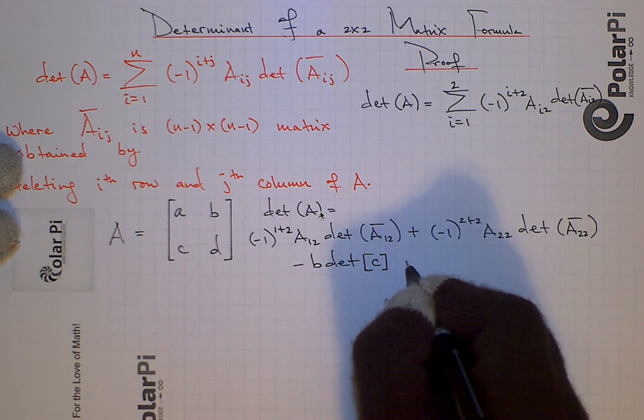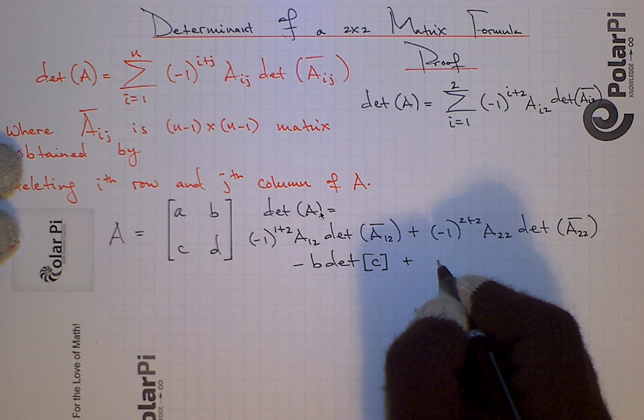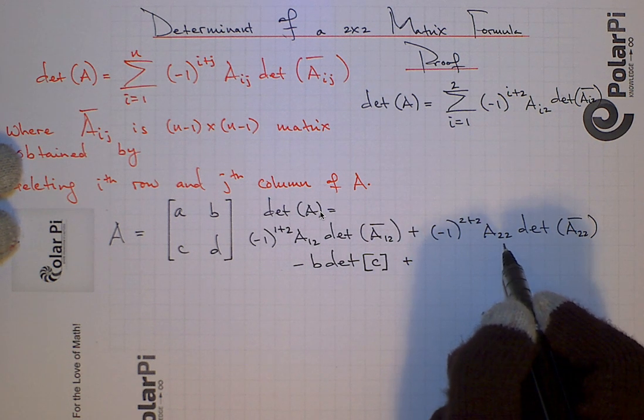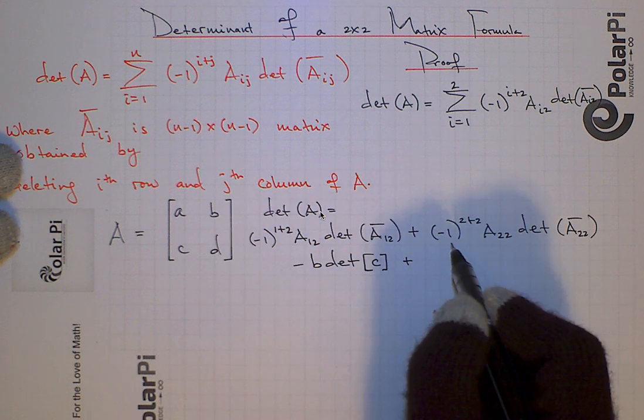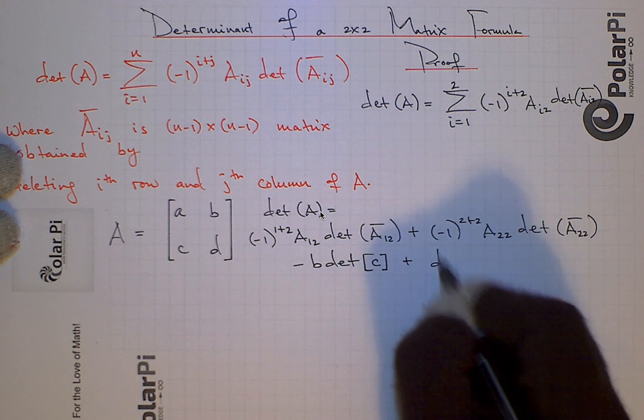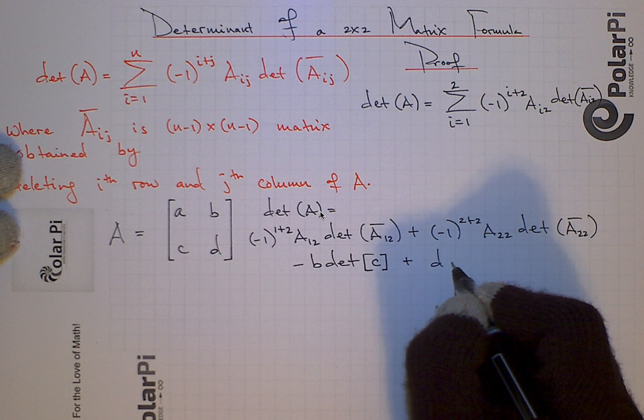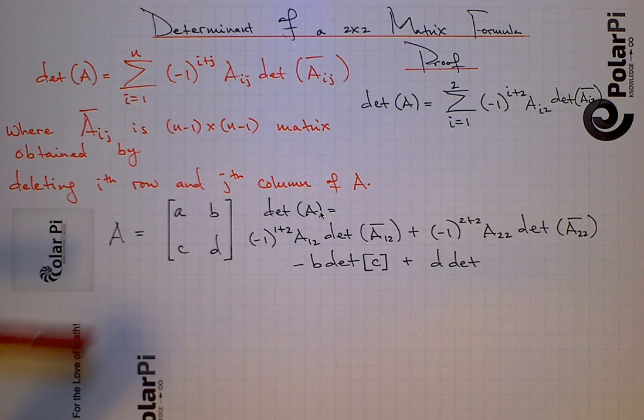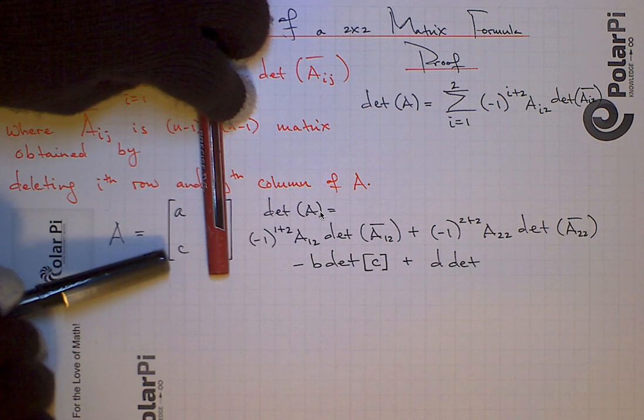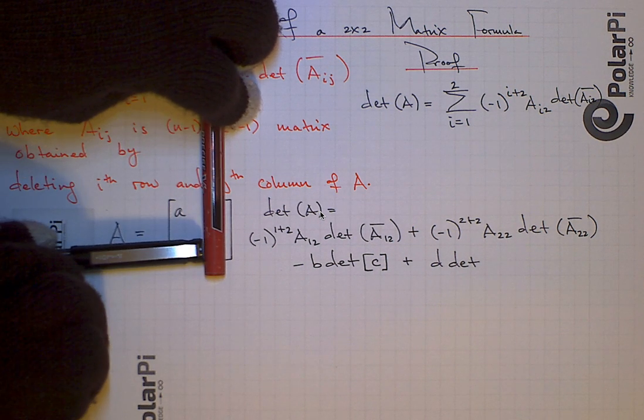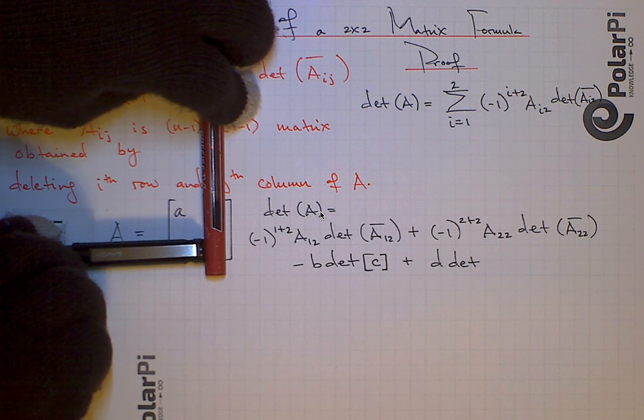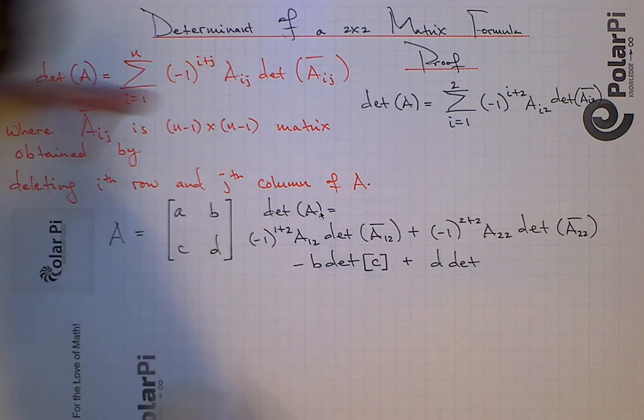And then we'll have plus, it's going to be negative 1 to the 4th power, so that's positive. So that's positive 1. A positive 1 times A22. A22 is D, so we just have positive 1 times D. So that's going to be D times the determinant of A22 bar. But what's A22 bar? A22 bar is going to be the matrix that we get, and the 1 by 1 matrix at that, that we get when we cross out the row and column containing A22. And so that's just the 1 by 1 matrix with a single entry of A. So there we are.